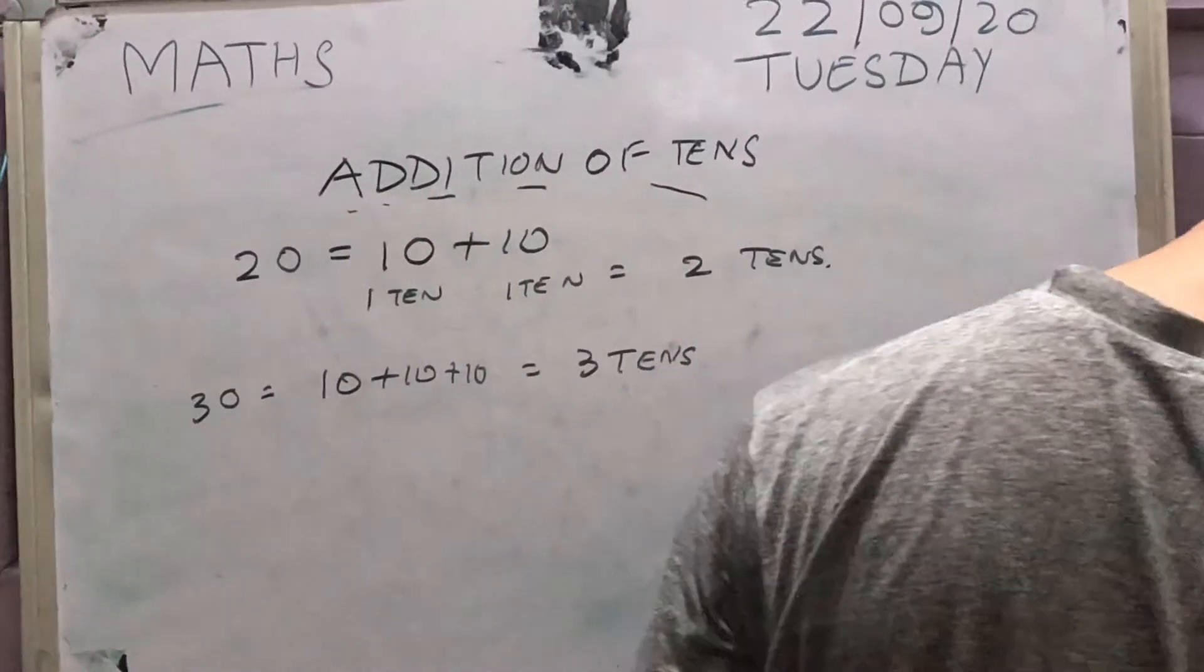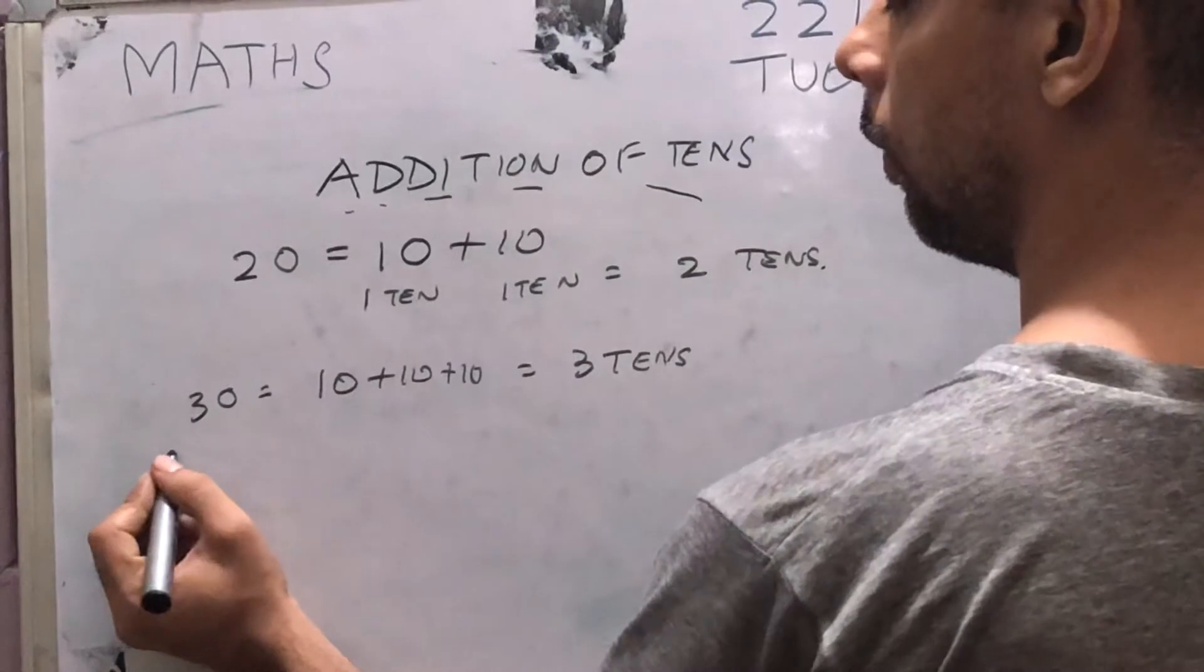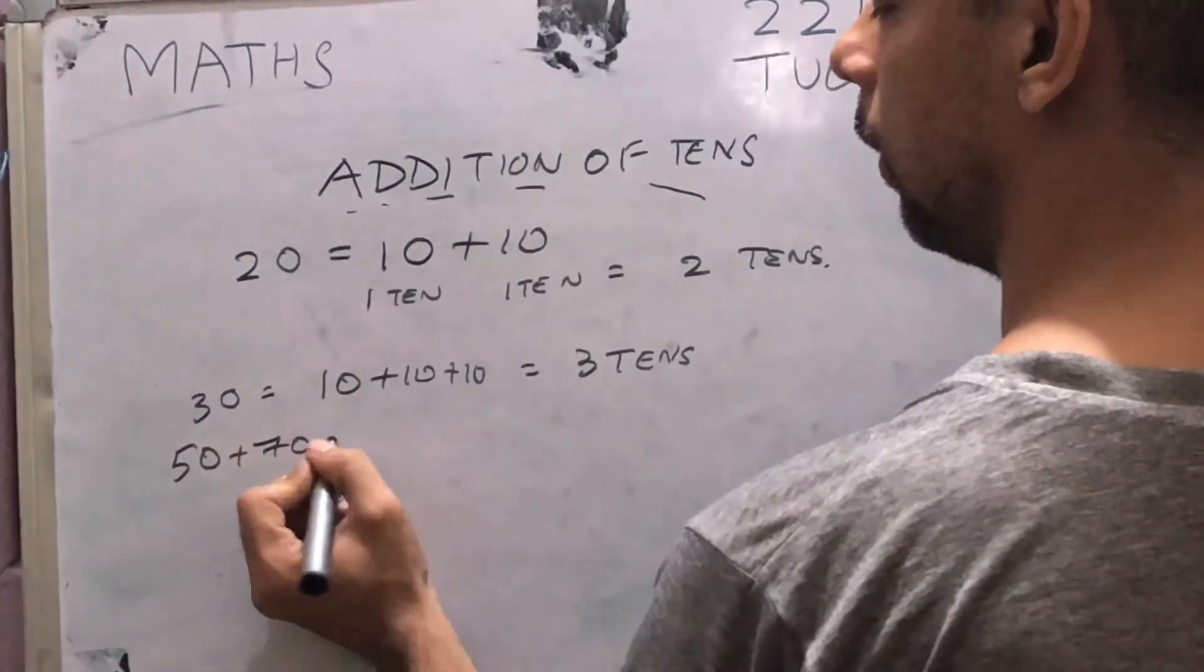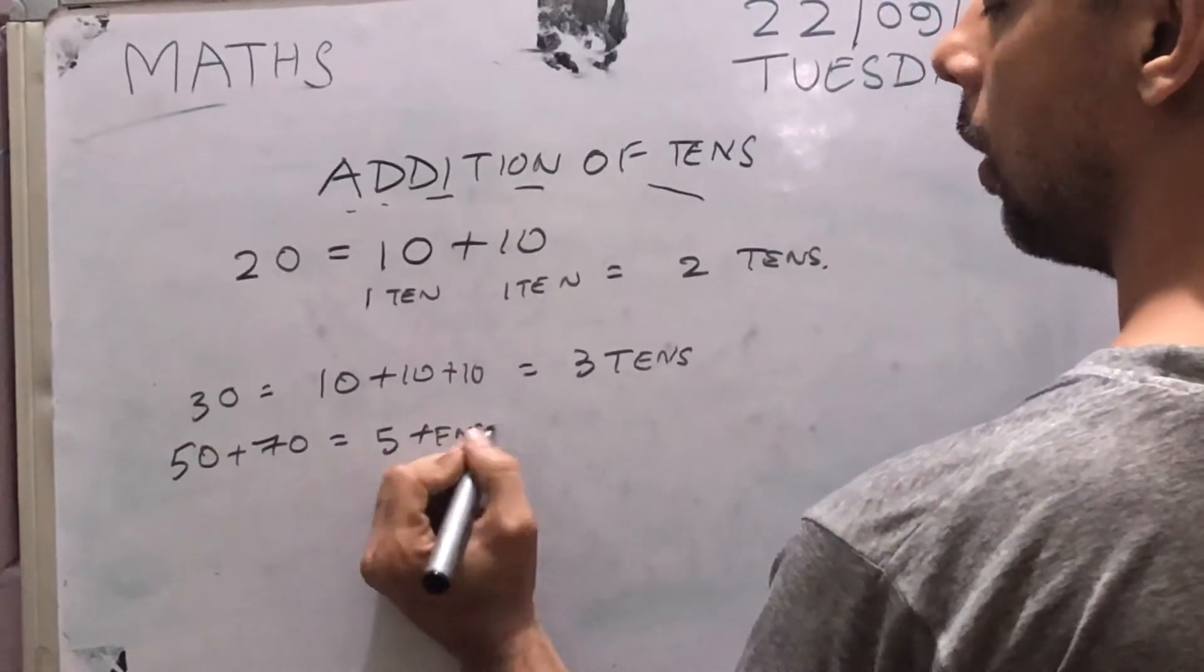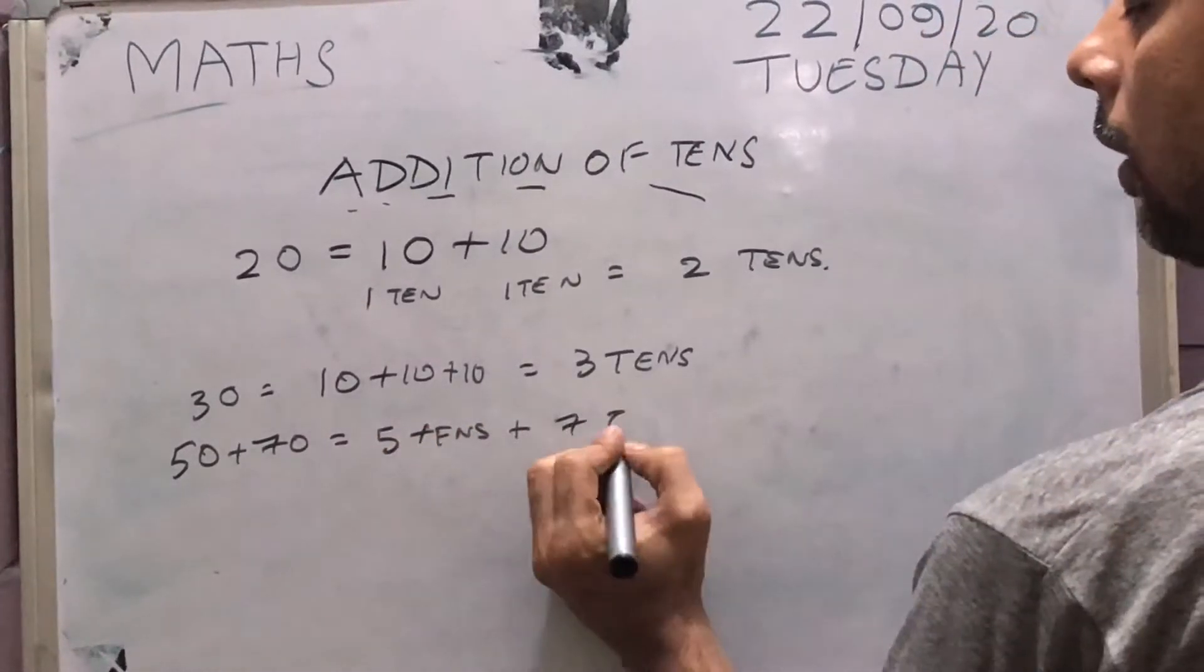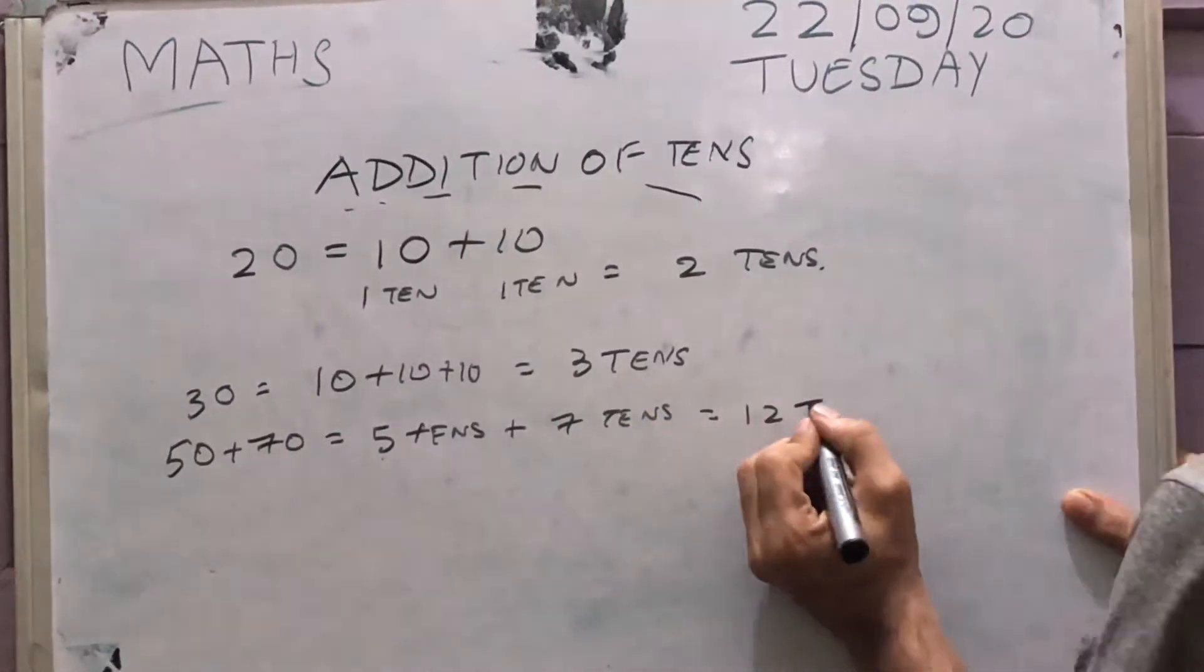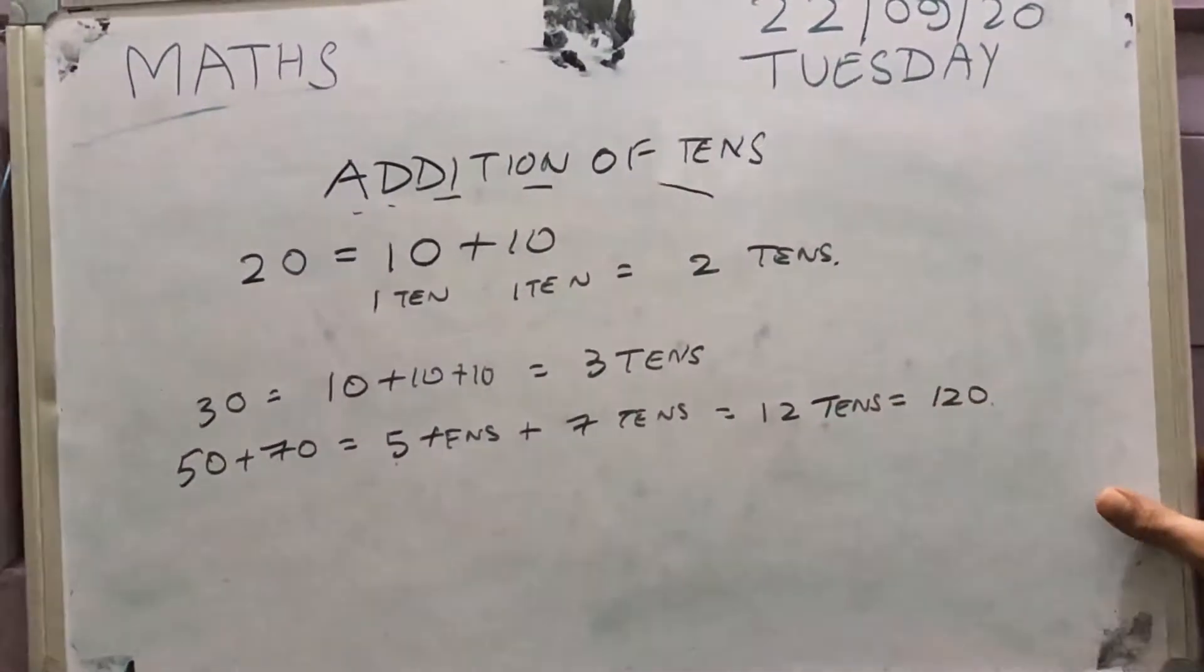In the same way, for example, 50 plus 70. This is 5 tens plus 7 tens, which is equal to 5 plus 7, 12 tens. So the answer is 120.